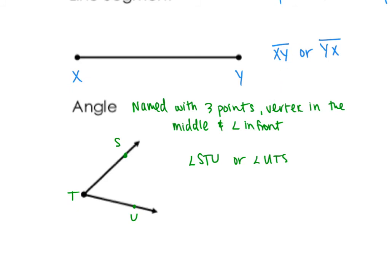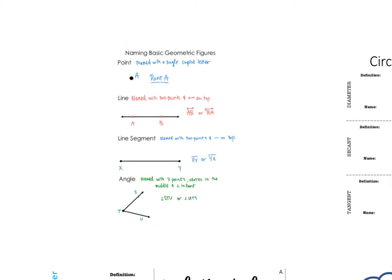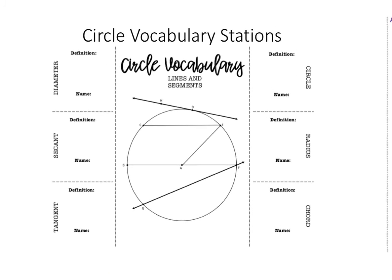Now that we know how to name basic geometric figures, we're going to look at circles and see how these geometric figures show up in circles and what we would call them. For the first part, you're going to be filling out the paper that has circle, radius, chord, diameter, secant, and tangent. I'm just going to talk through the definitions — if I'm going too fast, just pause the video, copy it down, and then play it again.